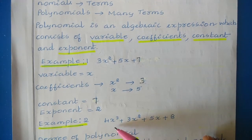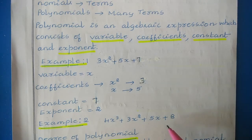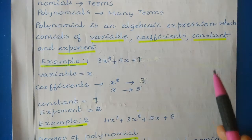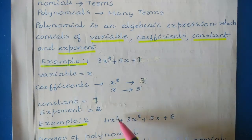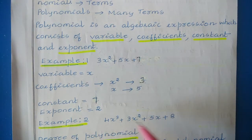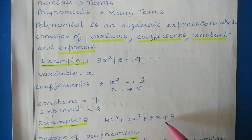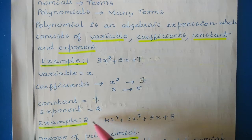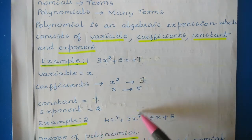Let us take another example: 4x³ + 3x² + 5x + 8. Here the variable is x. The coefficient of x³ is 4, coefficient of x² is 3, and coefficient of x is 5. The constant value is 8. The exponent values are the powers of the variable — here we have x³ and x², so the exponent represents the power of the variable.